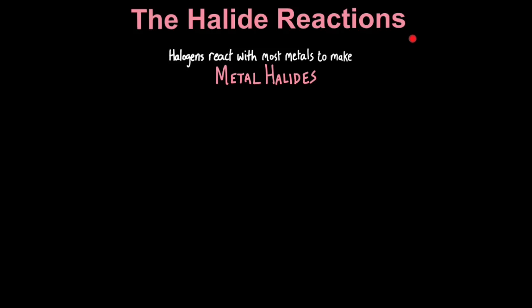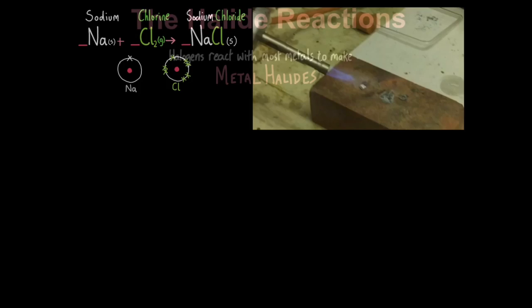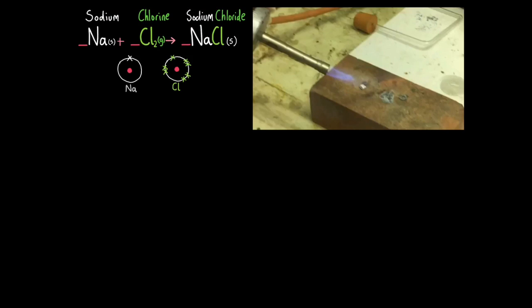So now we're going to look at the halide reactions, the salt making reactions. Halogens react with most metals, like iron, sodium, and aluminum, to make metal halides, metal salts. The first reaction we're going to look at is sodium and chlorine to make sodium chloride.